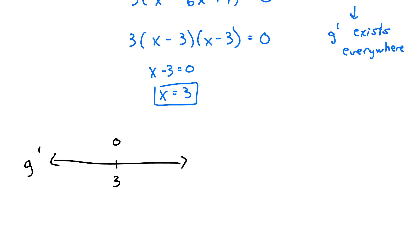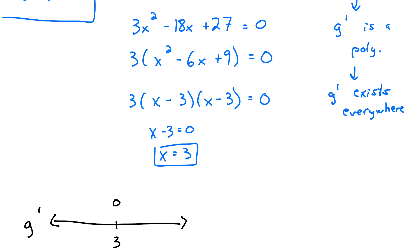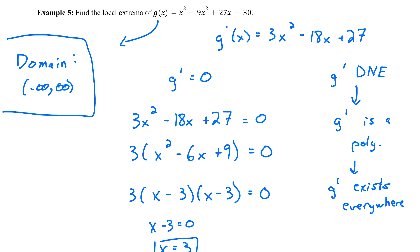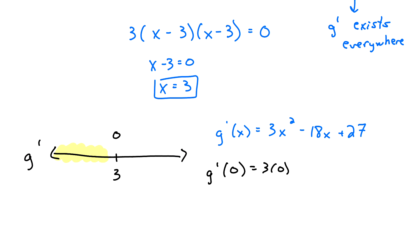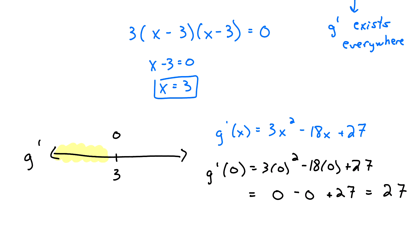Now I need to take a number on either side of x equals 3 and plug it into g prime of x. I'll copy g prime of x right in front of me so I don't make a mistake. Starting on the left-hand side of x equals 3, I'll pick x equals 0 because it makes the computations easy. So g prime of 0 will be 3 times 0 squared minus 18 times 0 plus 27, which gives 0 minus 0 plus 27 — a positive 27. Since it's always the sign we're interested in, I'll put plus signs to the left of x equals 3.